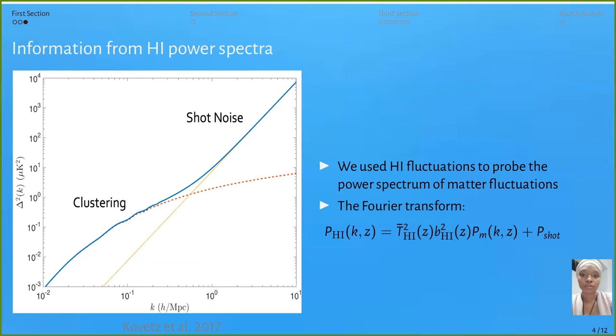Information from H1 power spectra: we use H1 fluctuations to probe the power spectra of matter fluctuations. The Fourier transform means matter fluctuations are traced by H1 bias and background temperature of H1 intensity mapping. This is the model of H1 power spectrum with clustering of galaxies and shot noise. In our work, we neglected the shot noise.